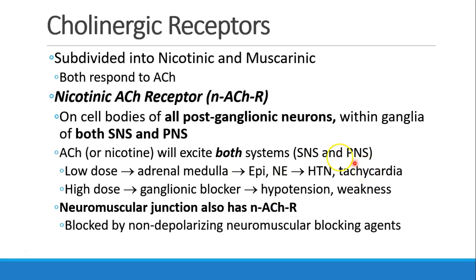Usually at low doses of acetylcholine, you might see the adrenal medulla type effect, where epinephrine and norepinephrine are being secreted, and you get hypertension and tachycardia. But at higher doses, it's going to be working at the ganglionic level, and we're going to see hypotension and weakness.